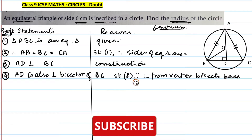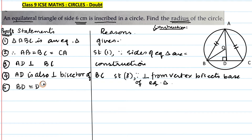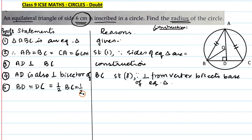Statement 5: therefore BD = DC = half of BC. Since each side is 6 centimeters, BD = DC = half × 6 = 3 centimeters. The reason is from statement 4 — perpendicular from vertex bisects the base of an equilateral triangle.